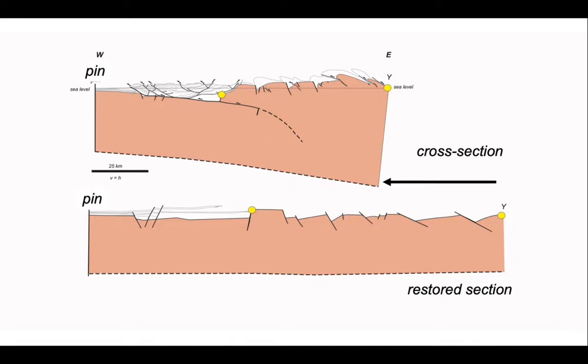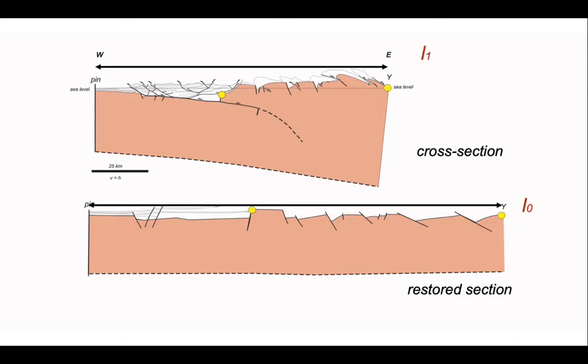The change in length of section is what we're trying to analyse here. The present day cross-section length, L1, is simply a distance between a pin that we set up on the western end and Y, the eastern end of the cross-section. And we can identify both places on our restored section and make a measurement L0.